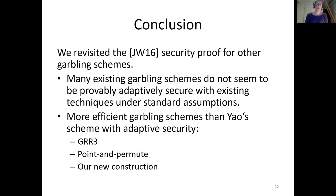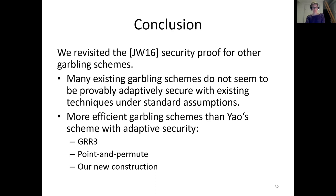To summarize: we revisited the JW security proof for practical garbling schemes — optimizations of Yao's garbling scheme. We discussed that many existing garbling schemes do not seem to be provably adaptively secure with existing techniques under standard assumptions — that's the negative result. The positive result is that there are more efficient garbling schemes than Yao's that also have provably adaptive security: three-row reduction (used for AND gates) has adaptive security, the point-and-permute technique is not in the way of adaptive security, and our new construction actually improves over three-row reduction. Thank you.